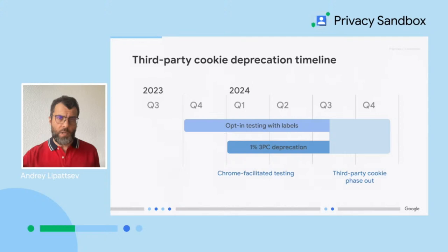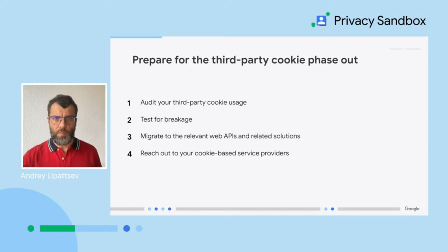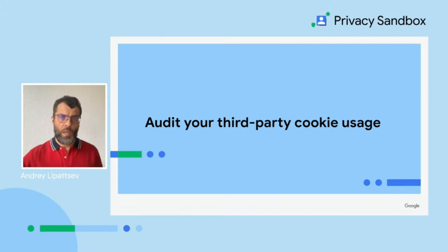When is this deprecation happening? The short answer is now. Chrome has started the process gradually with 1% of our users, and pending input from regulatory bodies like the UK's CMA, we are aiming to be done by the end of 2024. There are four main steps you need to take to prepare. They boil down to: see what's happening, see what's breaking, make the changes you need to make yourself, and ask those you're working with and relying on to make them too.